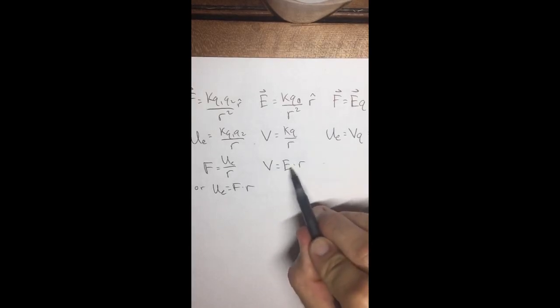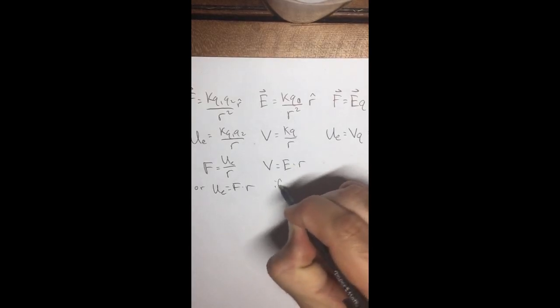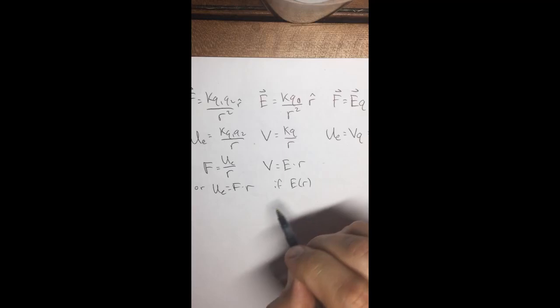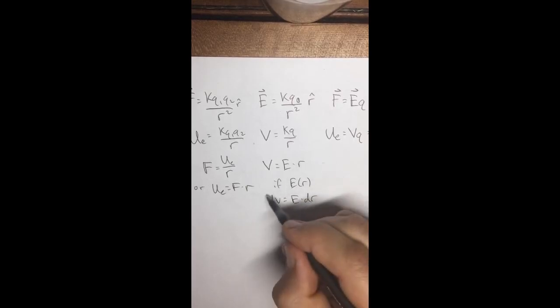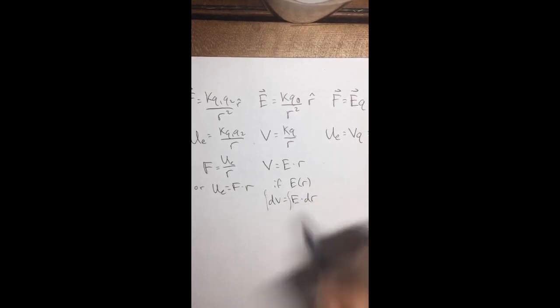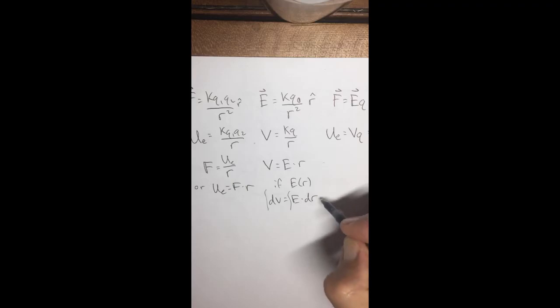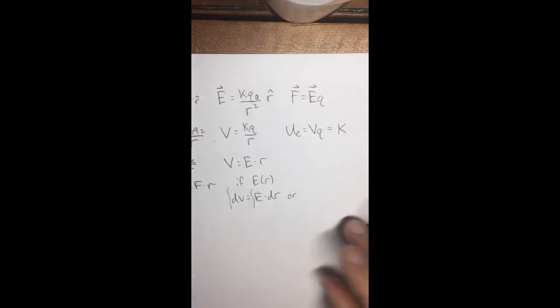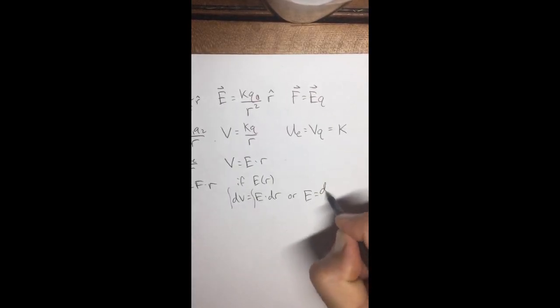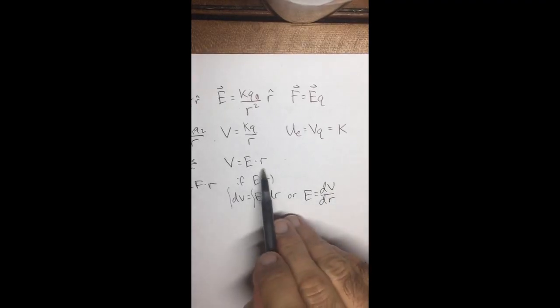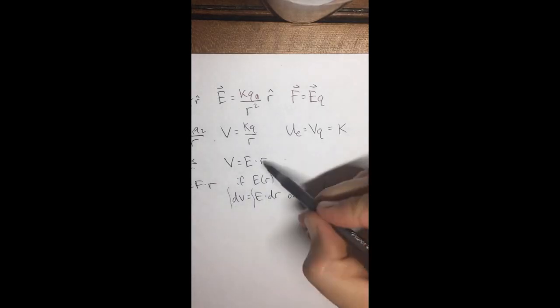Now, that gets a little funky because you've got to keep in mind that if E is a function of R, it's not a constant, then we'll have like a little DV equals E DR type of thing going on, where you might have to take an integral if electric field is a function of R, that type of thing. And likewise, you might be able to see, we have another R here, that E is the derivative of the potential with respect to R.